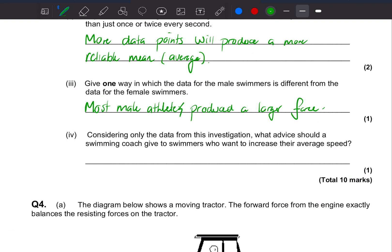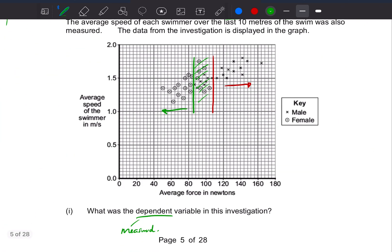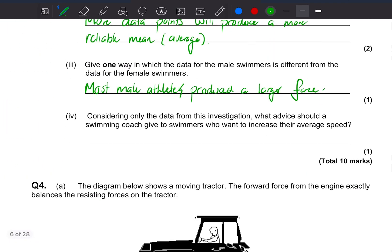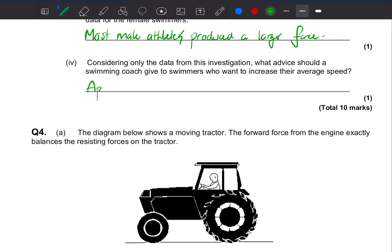Considering only the data from this investigation, what advice should you give a swimming coach to give to swimmers who want to increase their average speed? Well, average speed just shows some kind of correlation with the average force. So you would tell the swimming coach to ask their athletes to apply more force on every stroke. So you would tell them to apply more force to each stroke. Okay, end of that one.